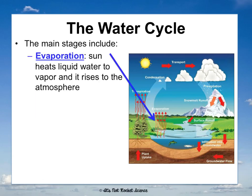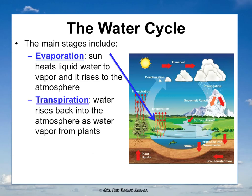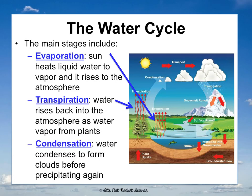Evaporation is when the sun heats liquid water and it becomes water vapor, rising to the atmosphere from a body of water. Transpiration is similar but different — this is when water rises back to the atmosphere coming off of plants, not a body of water. Finally, all that water vapor in the atmosphere condenses to form clouds, which eventually cause precipitation again. It's all a continuous cycle with no start or end.